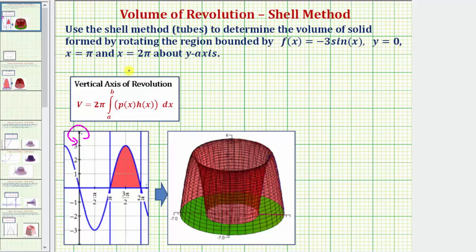The shell or tubes method is the best choice to find this volume because we have a function of x and a vertical axis of rotation. To determine the volume using the shell method with a vertical axis of rotation, we use this formula here.